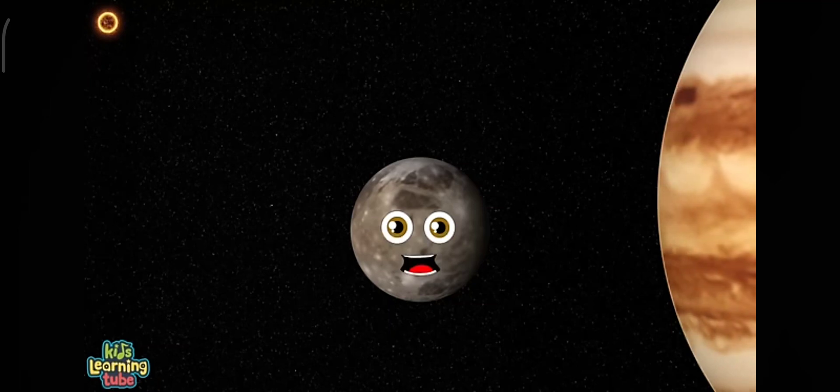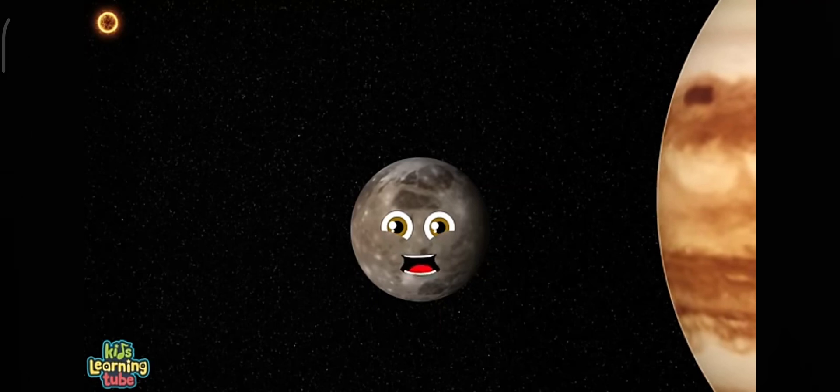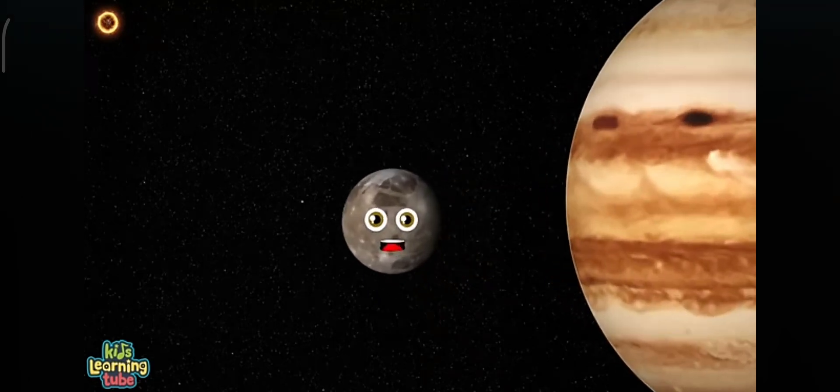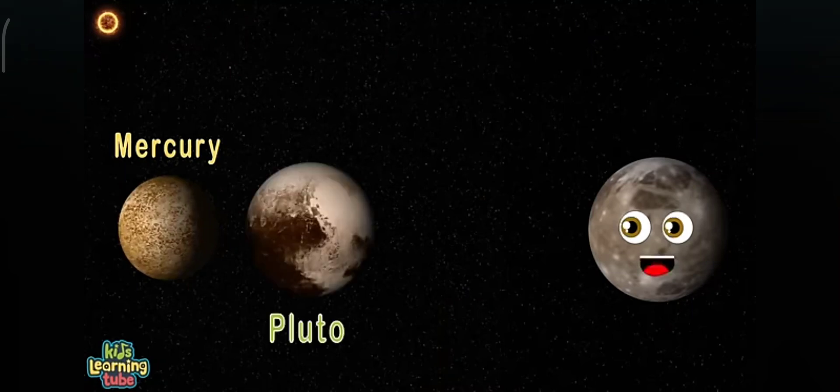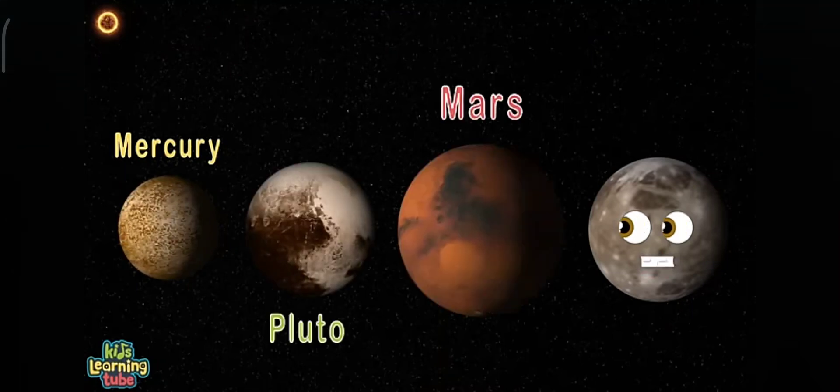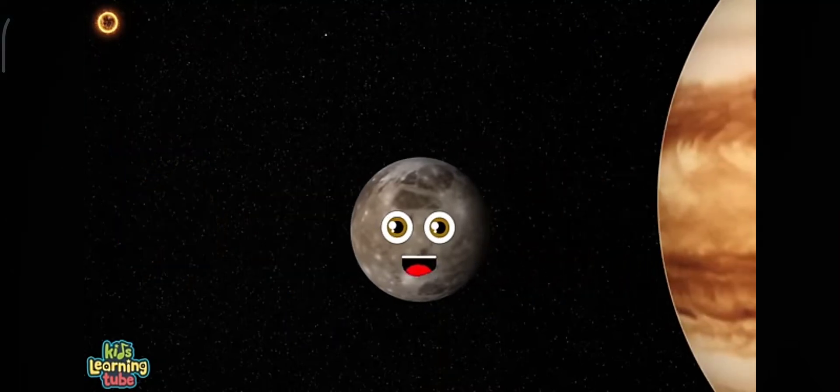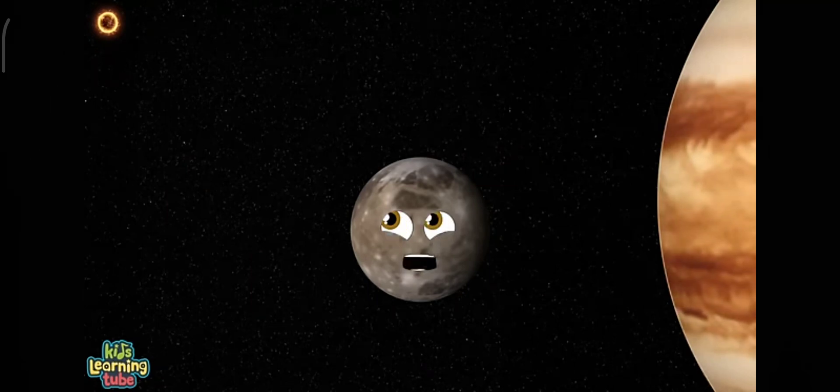I'm the largest satellite in the solar system. I orbit Jupiter, my name is Ganymede. Larger than Mercury, Pluto, and slightly smaller than Mars. I'd be classified as a planet if I orbited our star.